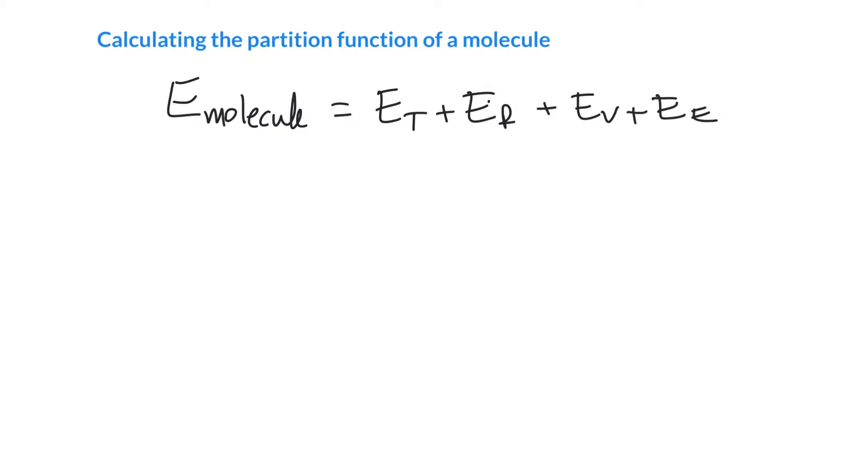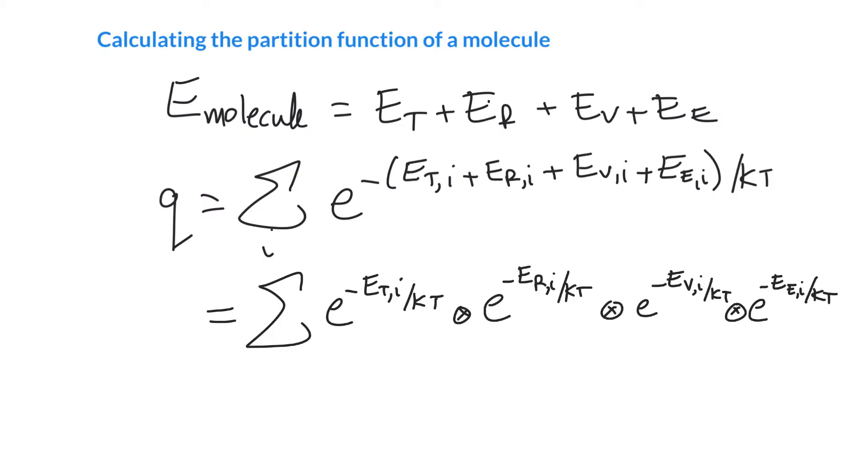So this allows us to write our partition function. Q is equal to the sum over all the states of E to the minus those energies. And here we've got translational energy, rotational, vibrational, and electronic here. And just like before, we've seen that we can actually separate these out. So these E to the exponents that are being added up together can be separated into separate terms. And so we now have a nice product of all four of those energy terms, one after the other.